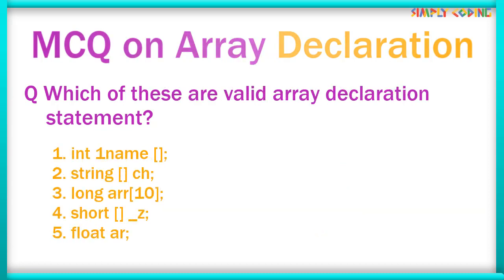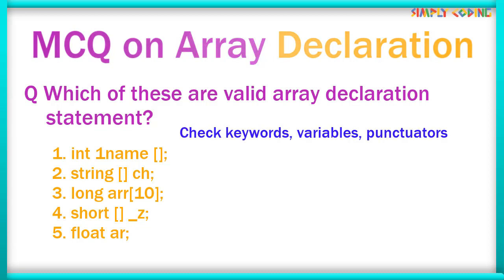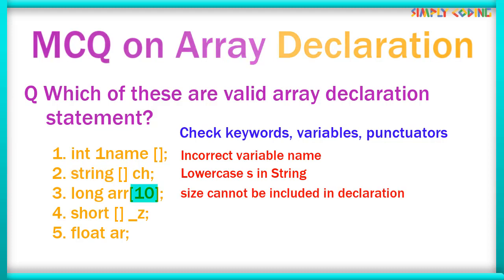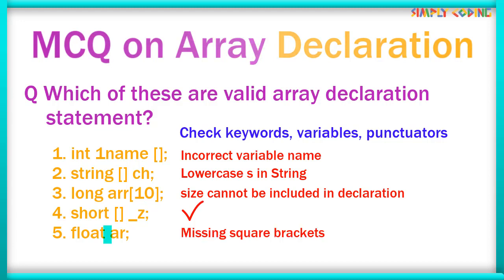In the next question, which of these are valid array declaration statements in Java? First, check that all keywords are correct and variables follow naming conventions. Here, 'one name' is an incorrect variable name. 'String' is incorrect as 's' is in lowercase. Next, you cannot include size during declaration, so ARR[10] is invalid. Underscore_z is a valid variable name, so it is a correct array declaration. Float ARR has missing square brackets, so it is not a valid array declaration.